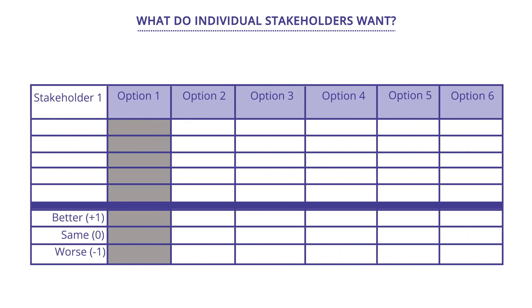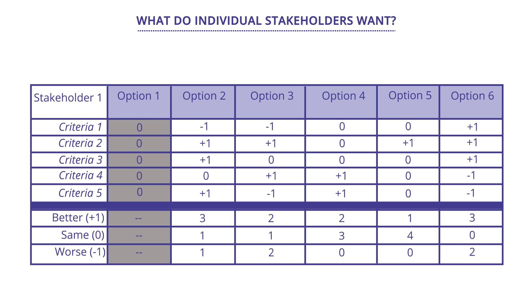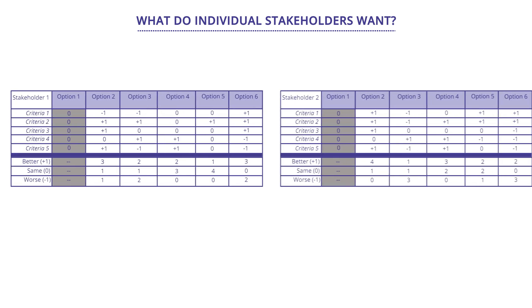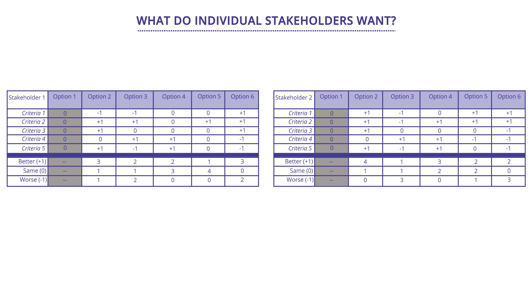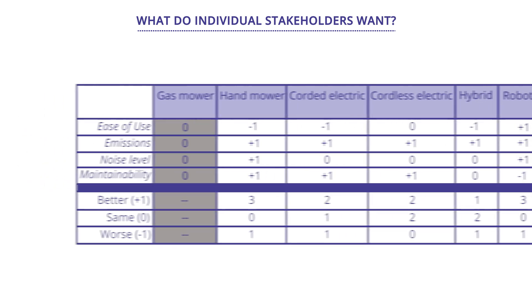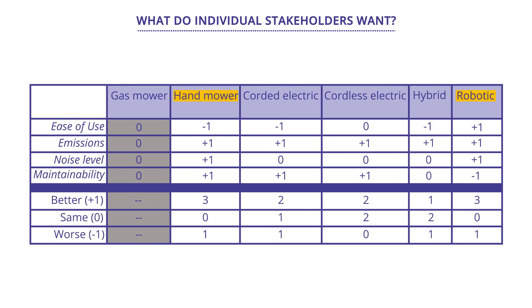You can also use matrices to look at what individual stakeholders want. First, elicit your most important criteria by interviewing a diverse set of stakeholders. Then when you engage a particular stakeholder, find out what their most important attributes are, run the matrix with those attributes, and discuss it with them. You can then use multiple matrices for stakeholder negotiations where each stakeholder can see what's important to their peers. In this example, the hand mower and robotic mower scored the same — you cannot make a decision by simply looking at scores. You have to talk more with stakeholders to find out why those preferences tally as they do.